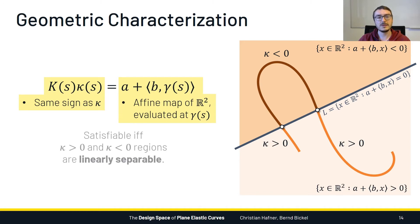So in summary we have seen that we can satisfy this equation by making appropriate choices for A, B and K if and only if the positively and negatively curved parts of the curve are linearly separable, which is the same as saying that we can draw a line that intersects the curve exactly in its inflections.